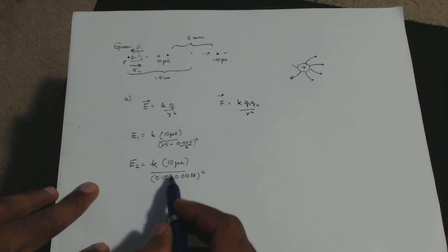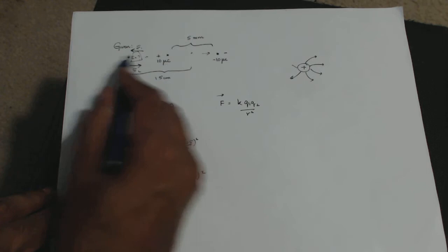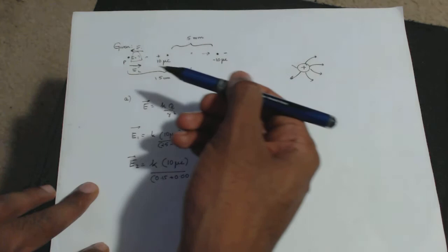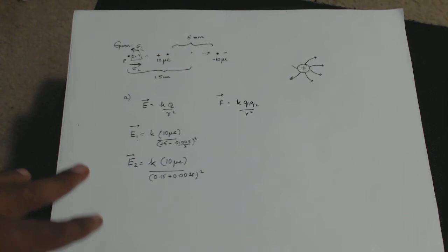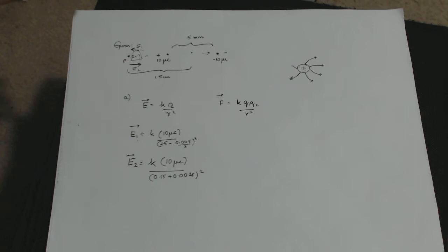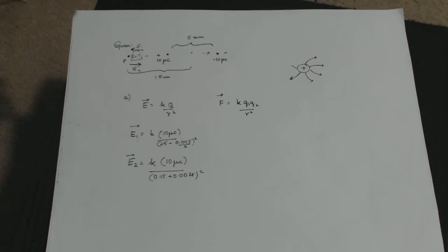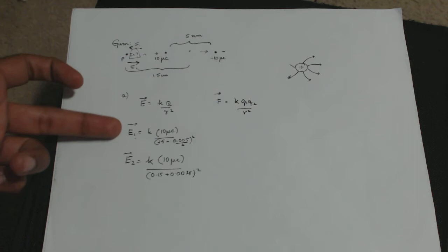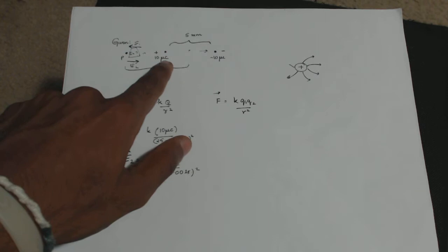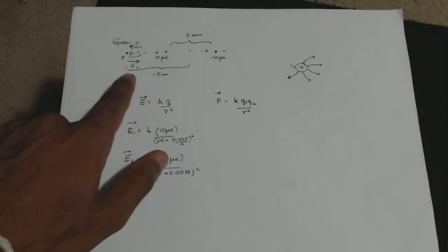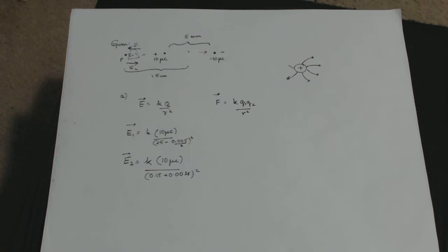E1 points left and E2 points right. Since E2 has a larger denominator, E2 is smaller than E1, so the net electric field points to the left. The net field value is E1 minus E2. To summarize: find E1 and E2 using the formula with the respective distances from each charge to point P, then subtract since they oppose each other.